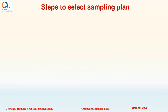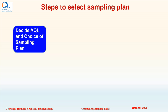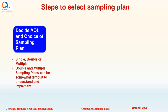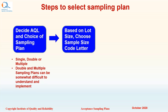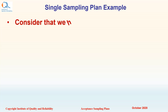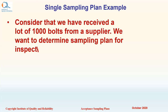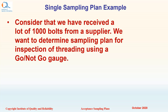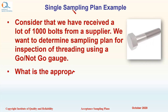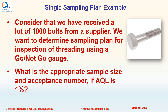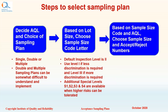Steps to select the sampling plans: First, decide AQL and choice of sampling plan — single, double, or multiple sampling. Double and multiple sampling plans can be somewhat difficult to understand and implement. Based on lot size, choose the sample size code letter. The default inspection level is 2. Use level 1 if less discrimination is required and level 3 if more discrimination is required. Additional special levels S1, S2, S3, S4 are also available, but these are to be used when higher risks can be tolerated. Based on sample size code and AQL, choose sample size and accept/reject numbers.